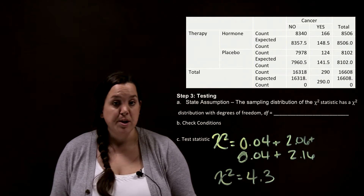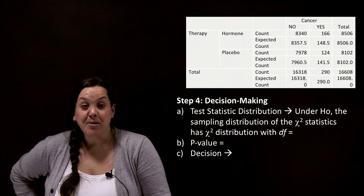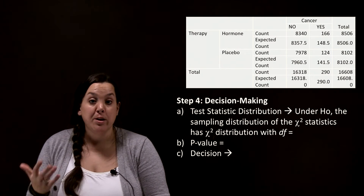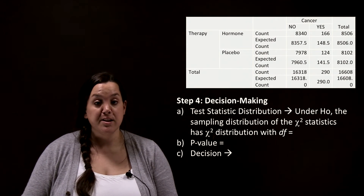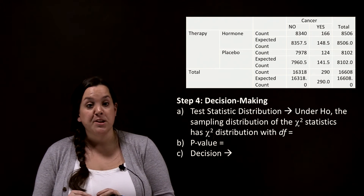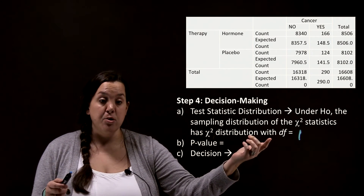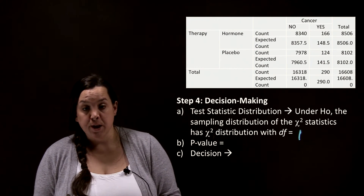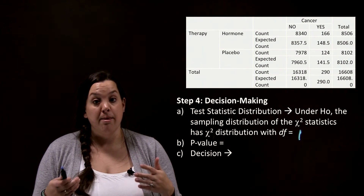Now we move into step four, which is finding a p-value connected to this test statistic. We need to find the probability of getting the results from step three or something more extreme. Because we calculated a chi-squared test statistic, that is the distribution we're working with, and from step three we had one degree of freedom. We'll use the calculator to find a p-value using the chi-squared distribution with one degree of freedom and the test statistic found in step three.